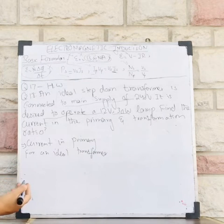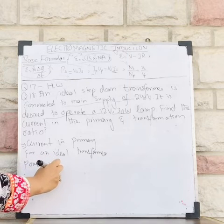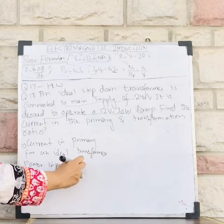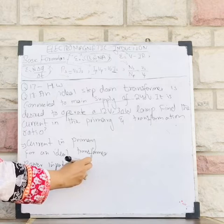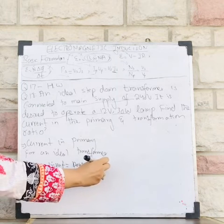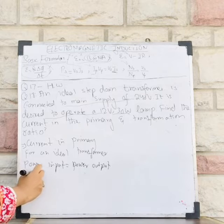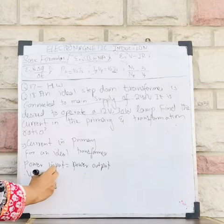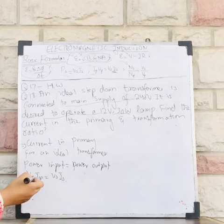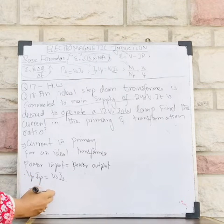Since this is an ideal transformer, power input equals power output, so Pp equals Ps. Therefore Vp times Ip equals Vs times Is. My unknown is Ip: Ip = Vs times Is divided by Vp.